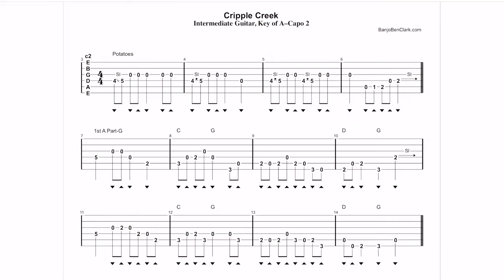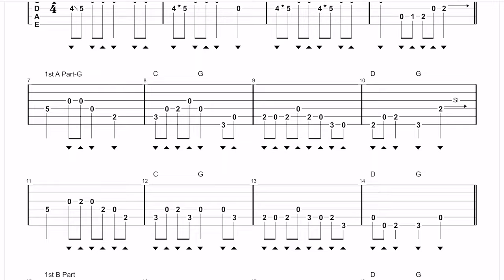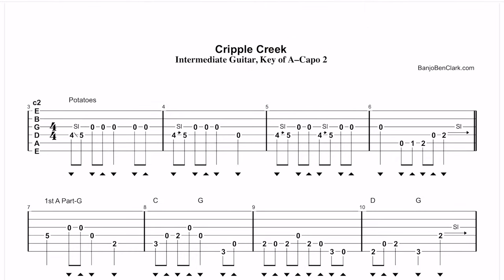As we pull up the tab here, the first line is just going to be the kickoff — that's what we call potatoes. Those are just used to establish the tempo and let other people know when to come in. Then as we get into the actual melody, you'll see it's labeled as the first A part, going from measure seven through measure 14. We are in the key of A, but we're going to capo two and play out of a G position. So all the chords and scales that we're thinking of from a guitar player's perspective are in the key of G.